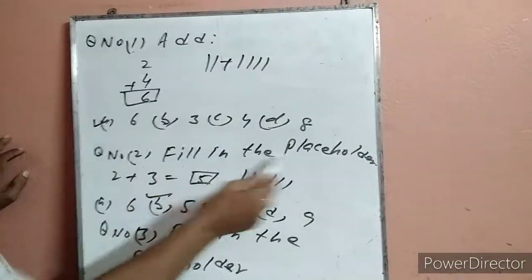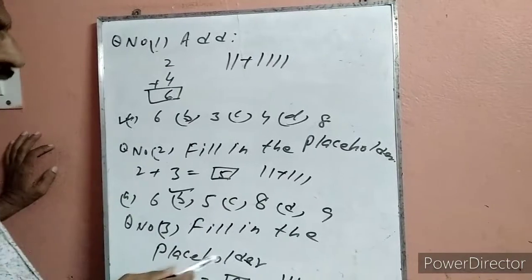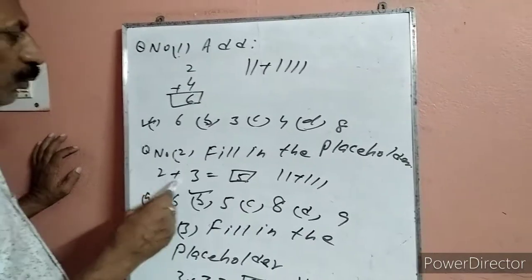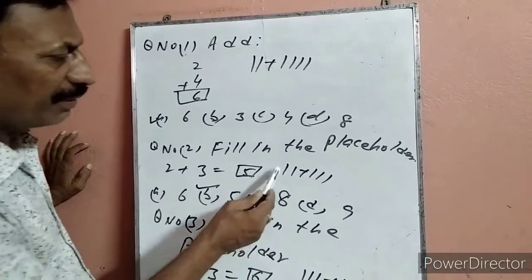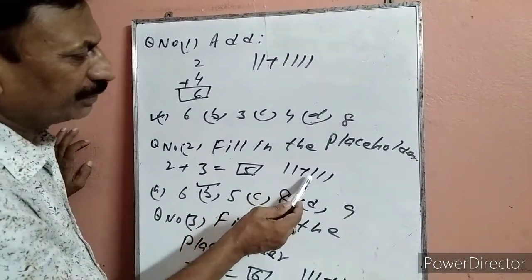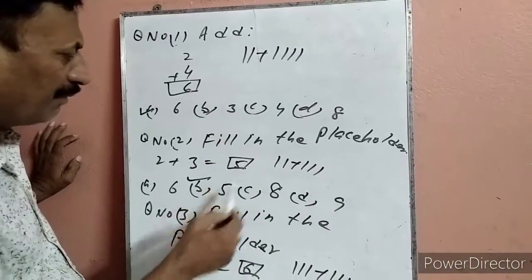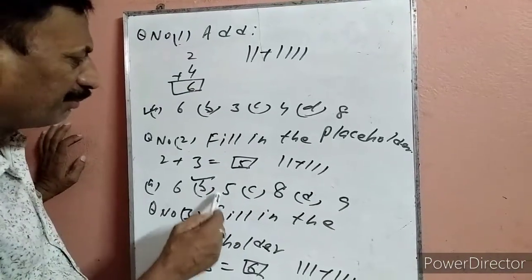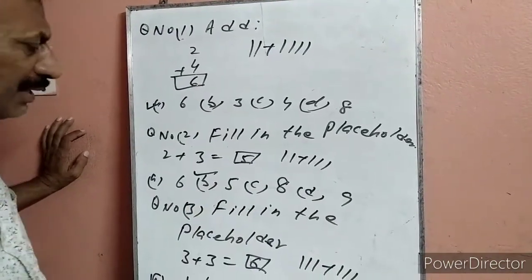Question number 2: Fill in the blank — 2 plus 3 equal to? Options A, B, C, D. हम count करेंगे: 1, 2, 3, 4, 5. 5 हो गया. 5 कहां पर है — B पर. इसलिए हमने B पर टिक लगा दिया.